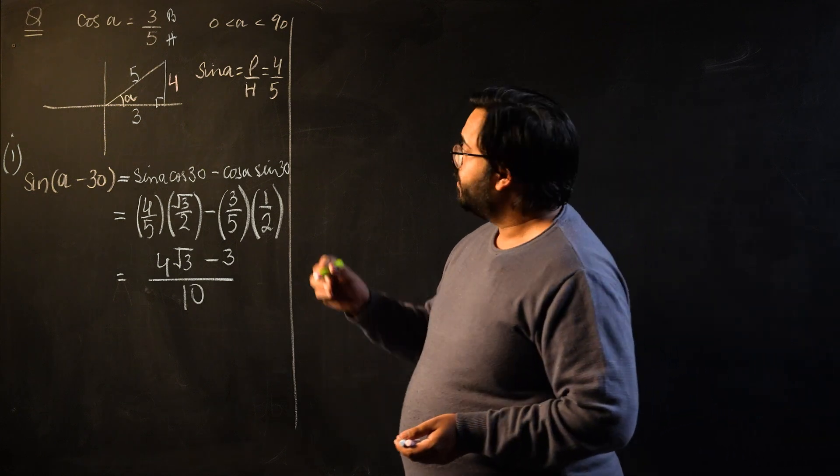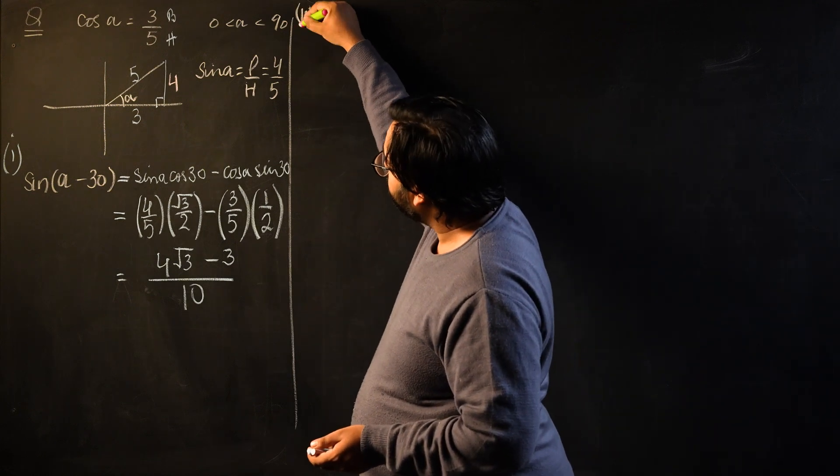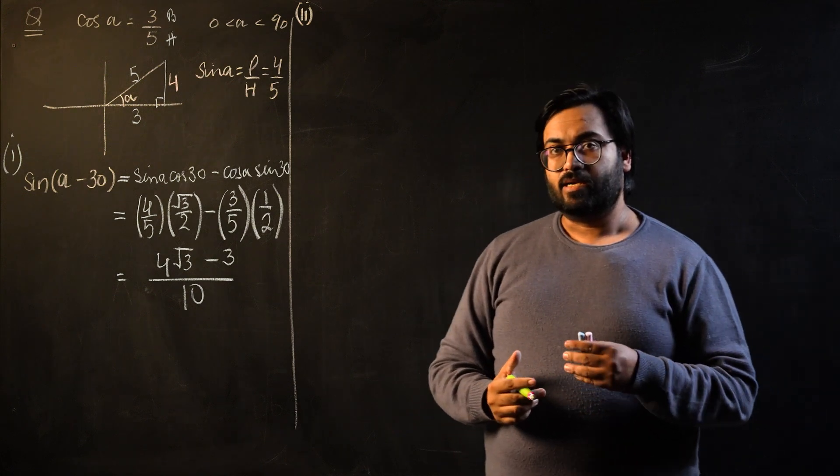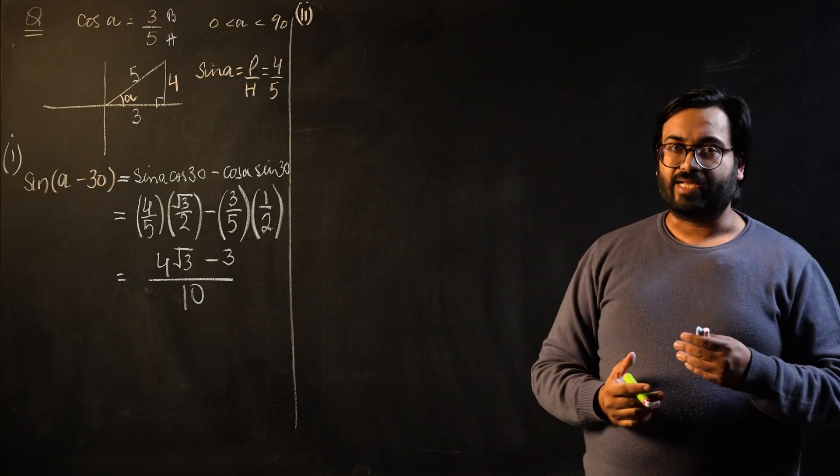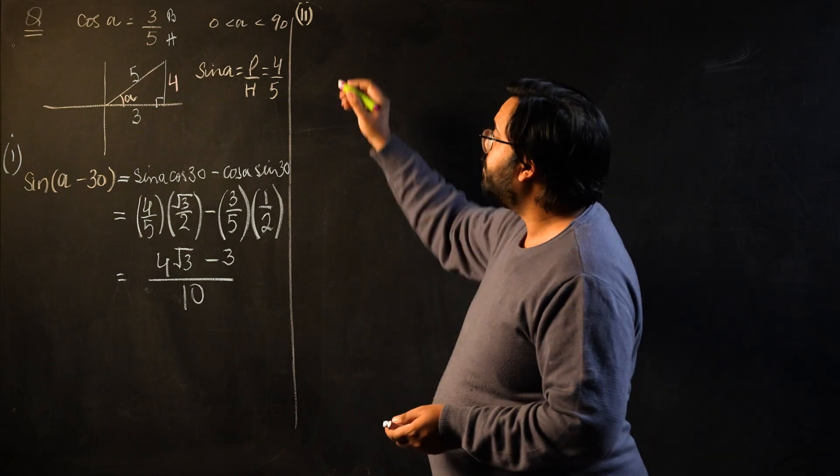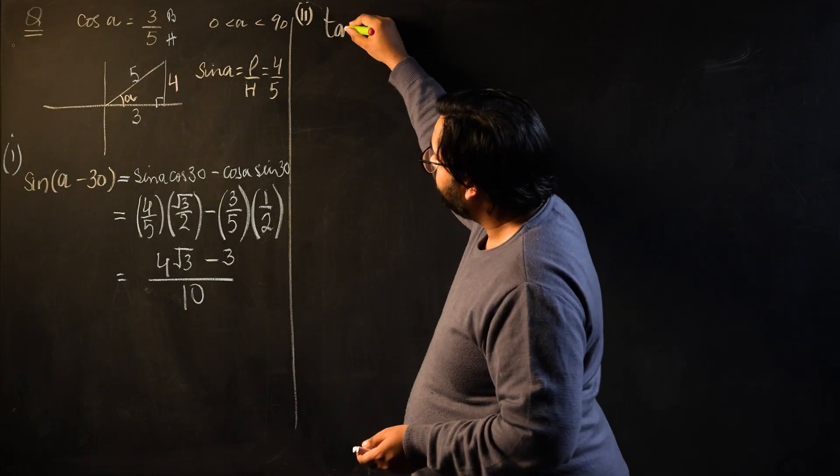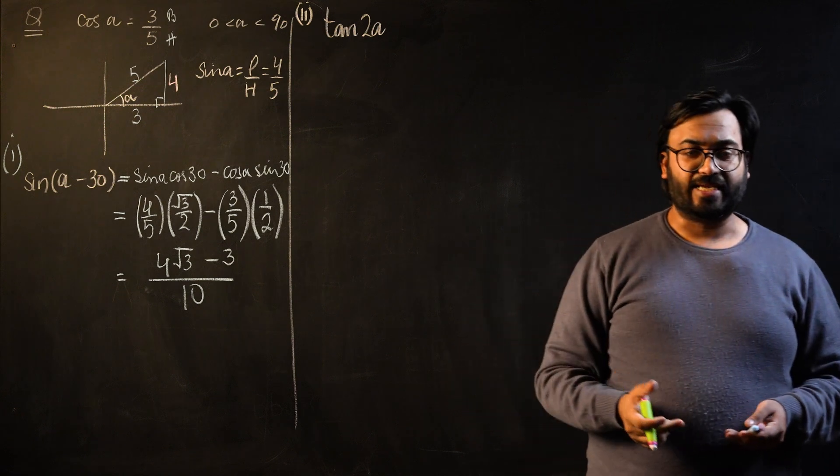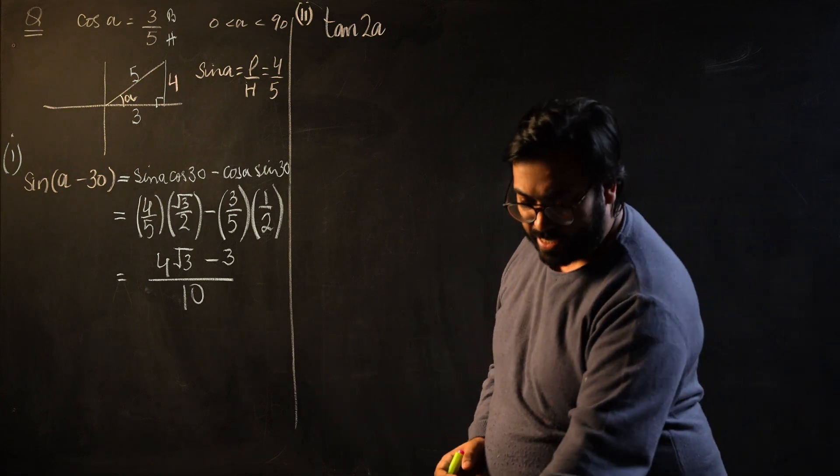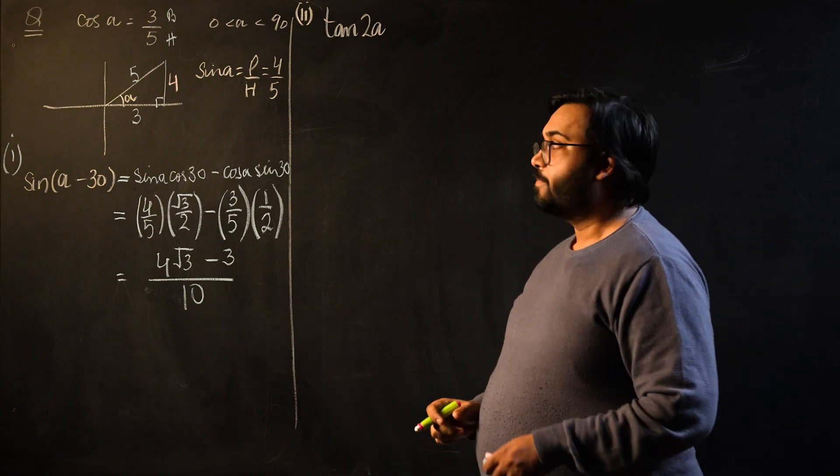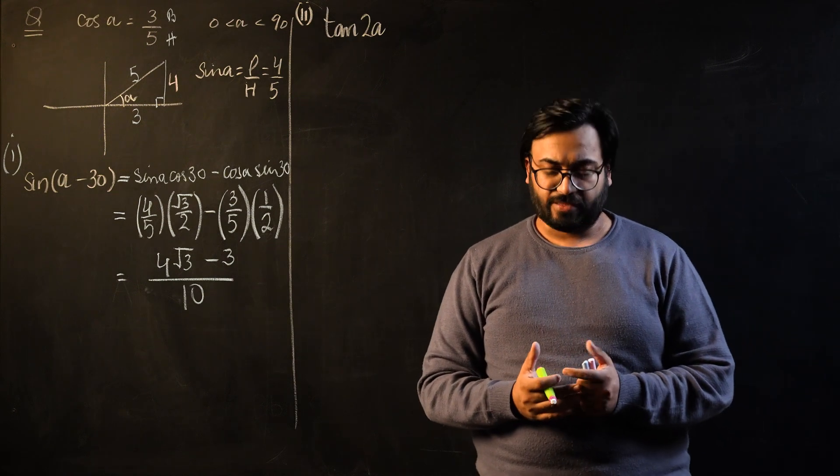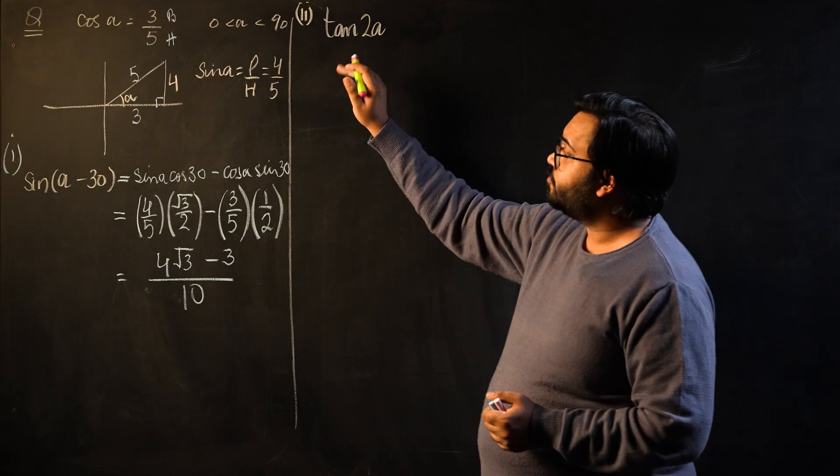Let's have a look at the second part, which is a little bit tricky. For the second part, you are required to find the exact value of tan(2α). Later on, we are supposed to find the exact value of tan(3α). So let's start with tan(2α). We know the double angle identity: it's 2tan(α)/(1 - tan²(α)).